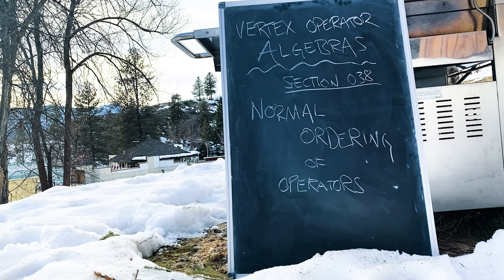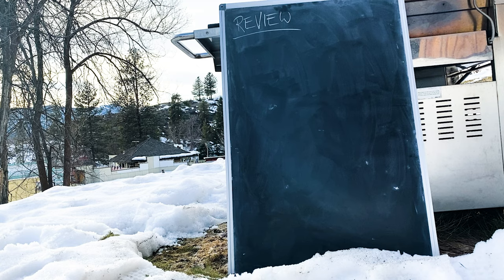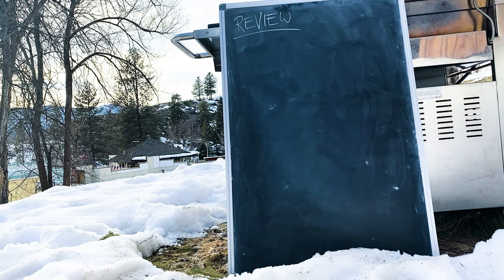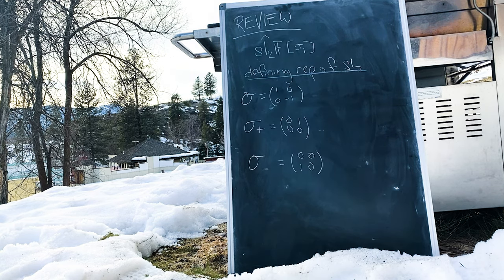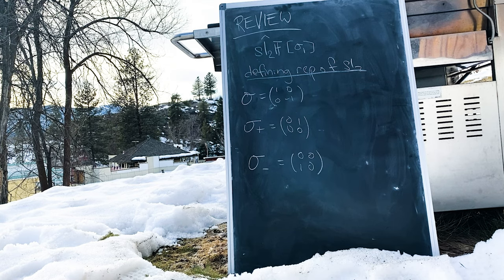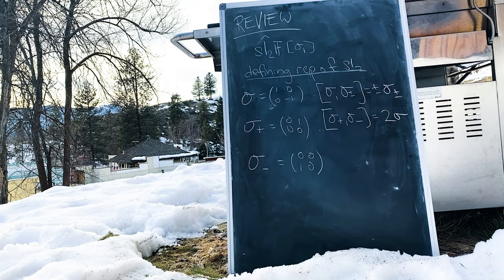But first things first, a little review is probably in order. We've been discussing the affine Lie algebra associated to SL2f for some field f, twisted by the action of the involution sigma1. The defining representation of SL2 was given in terms of the Chevalier basis of physicists' sigma matrices: sigma, sigma plus, and sigma minus. These satisfy the commutation relations that by now I hope you're familiar with.